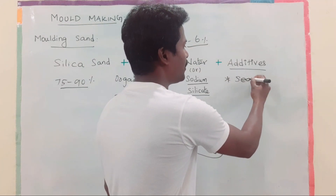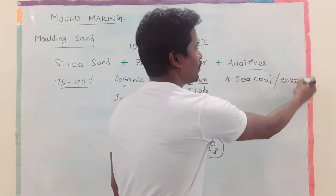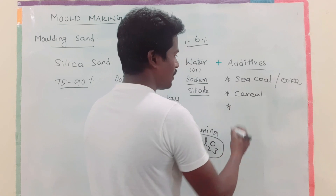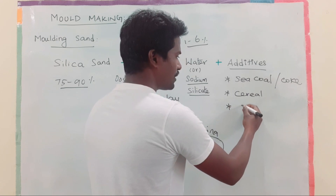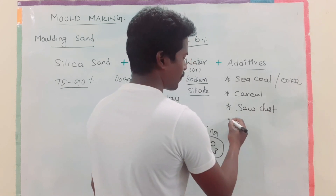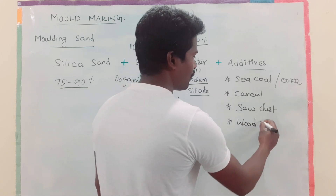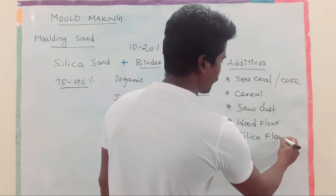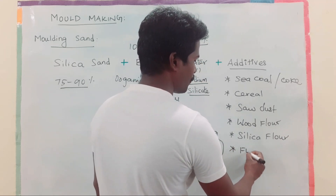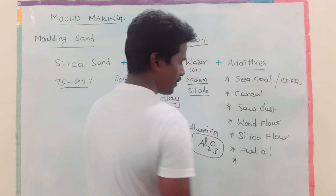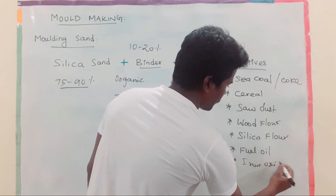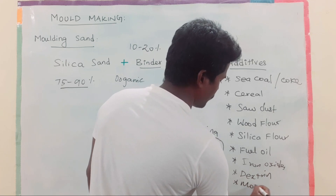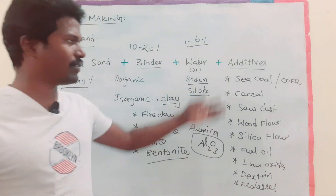Additives like sea coal or coke, sawdust, wood flour, silica flour, fuel oil, iron oxide, dextrin, and molasses — these are the general additives used in molding sand.